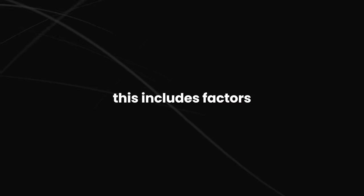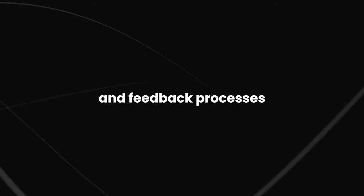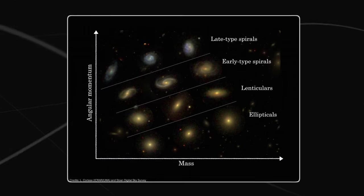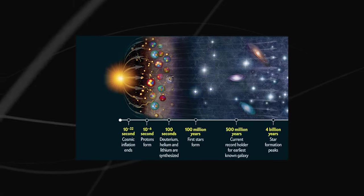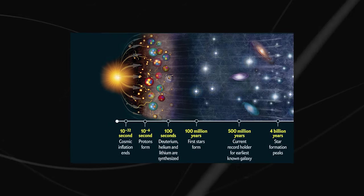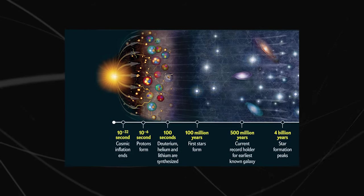This includes factors such as the distribution of matter, initial conditions, and feedback processes. AI is also being used to develop better ways to identify and classify galaxies, which can help us understand the different types of galaxies and how they form and evolve.